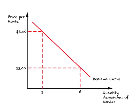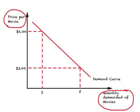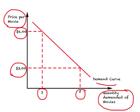On this diagram, price per movie is on the vertical axis and quantity demanded of movies is on the horizontal axis. When price equals $3, this person watches 5 movies; when price equals $6, they watch 2 movies to reach maximum total utility. If we did this for other prices, plotted these points, and joined them, we would get a demand curve showing price per movie versus quantity demanded of movies.